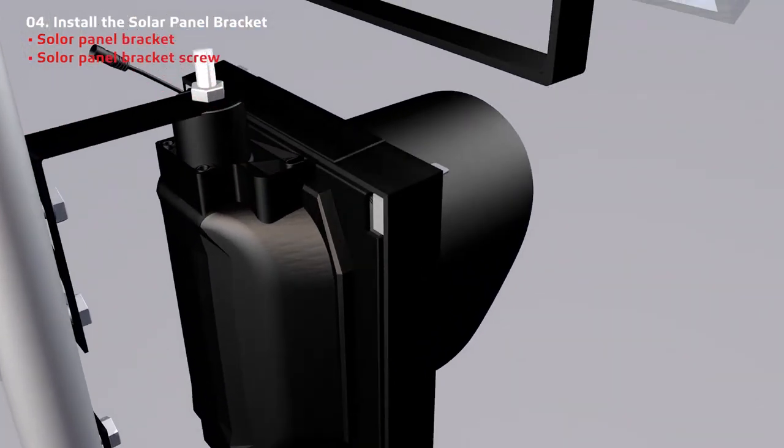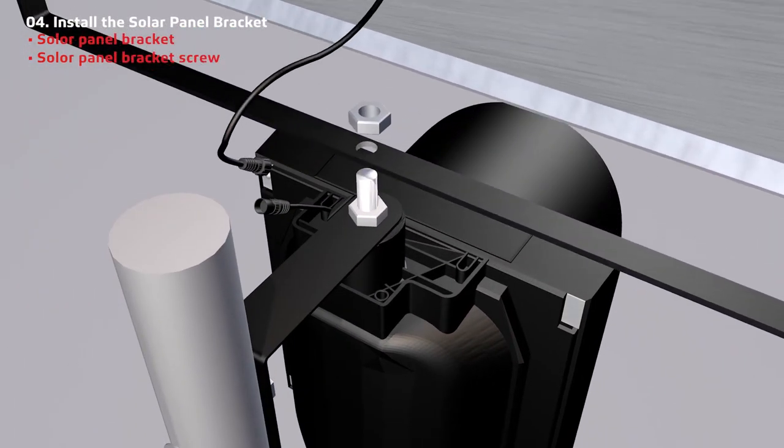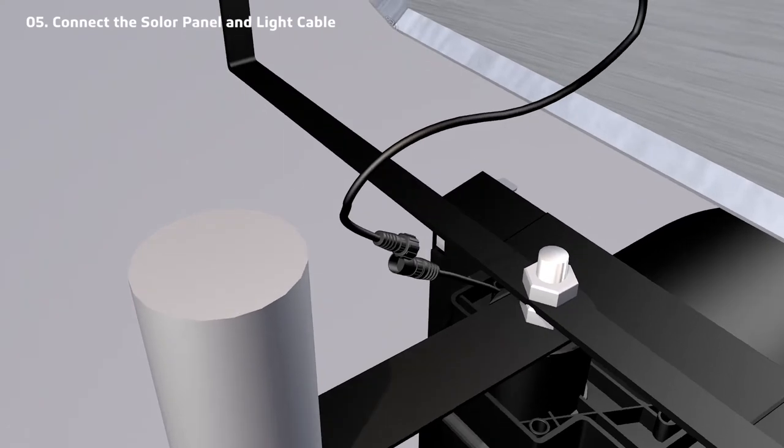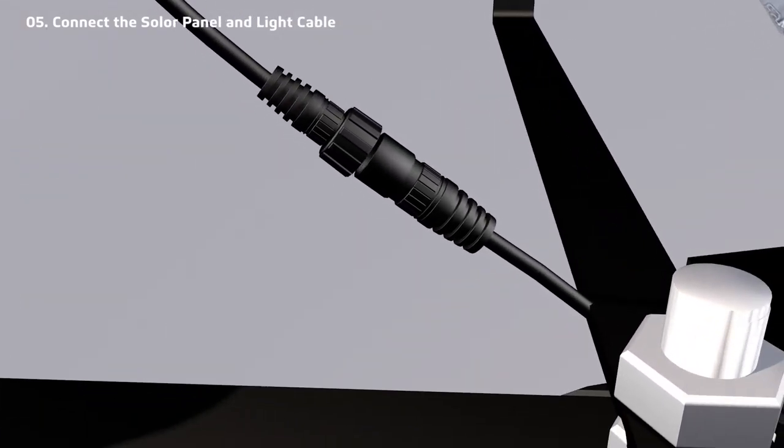Finally, install the solar panel bracket to the light bracket. Tighten to secure, and then connect the solar panel cable to the light cable.